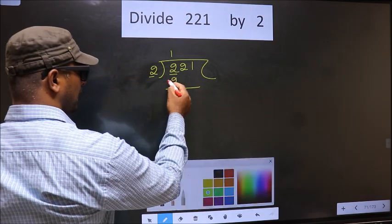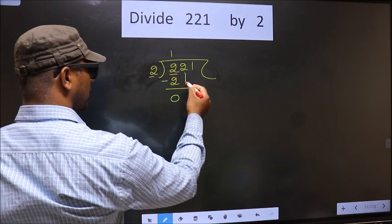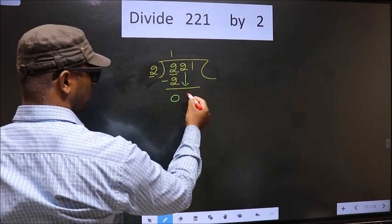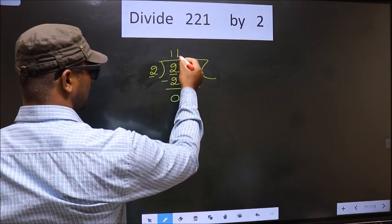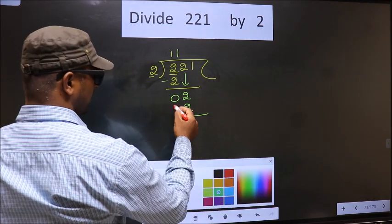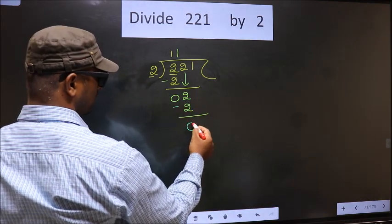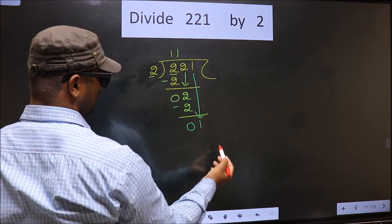Now you subtract 2 minus 2, 0. Now you bring down the beside number 2 down. So here we have 2. When do we get 2 in 2 table? 2 times 1 is 2. Now you subtract 2 minus 2, 0. Now you bring down the beside number, that is 1 down.